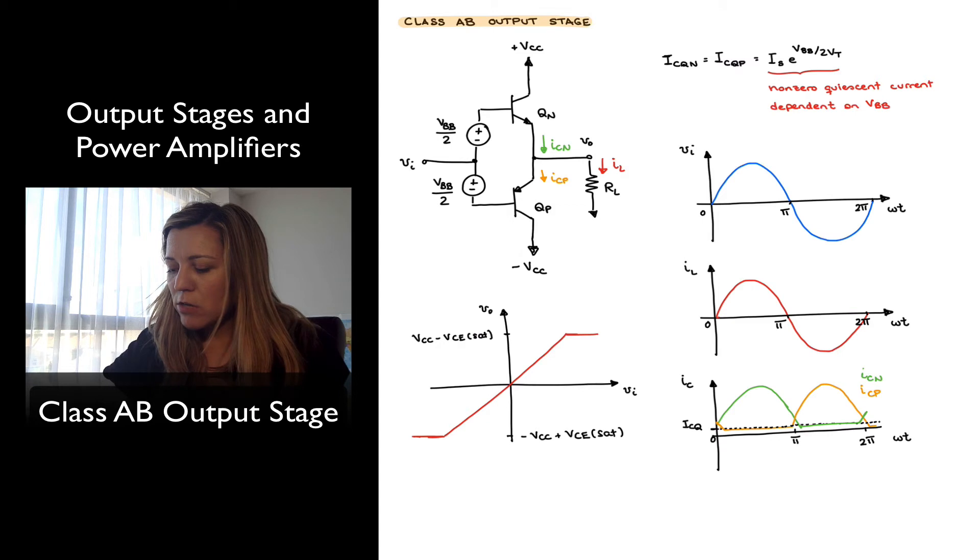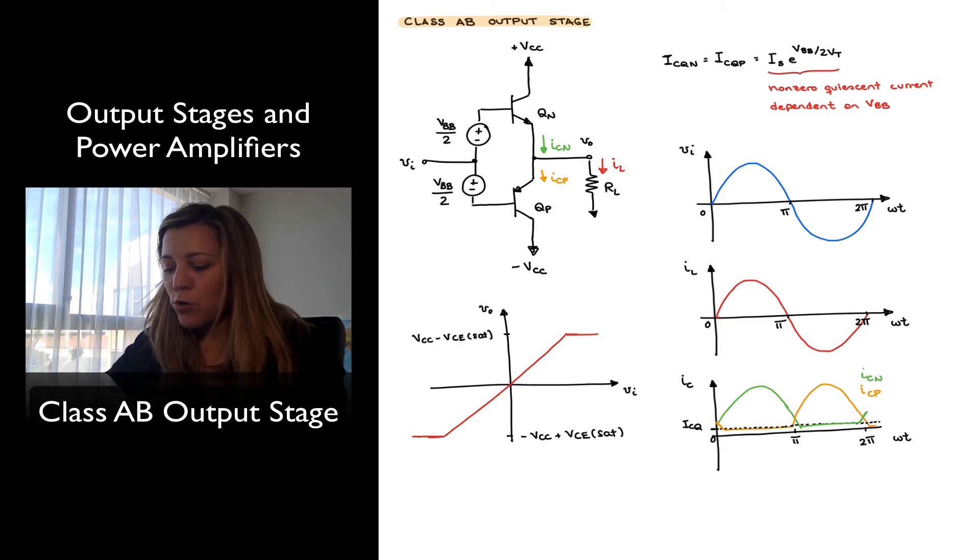So I've drawn here, in those three plots on the right-hand side, what's going on with the currents as the input voltage changes. So notice the first plot represents the input voltage applied over an entire cycle versus the angle, so from zero to two pi. And let's assume a sinusoidal input voltage. And when my voltage goes positive, that means I will be sourcing current towards my load through QN.